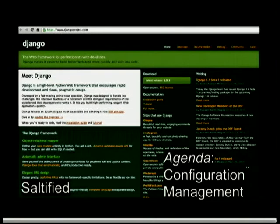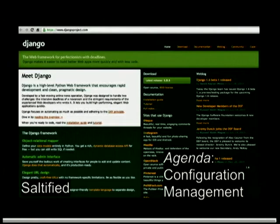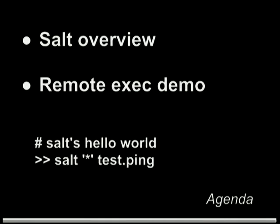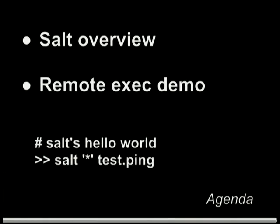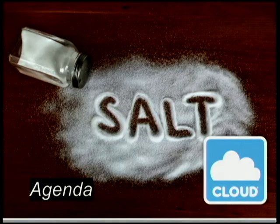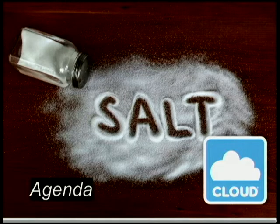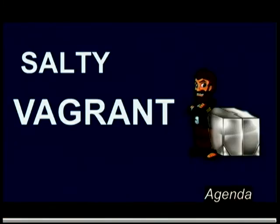So what I'm going to talk about — given the Django example, I'm going to give an example of deploying and configuration-managing a Django project website with Salt. I'm going to give an overview of Salt, how to do remote execution with Salt — that's Salt's Hello World — which communicates to all your servers and checks that they're communicating okay. If I get time, I'll talk about Salt Cloud, which spins up servers in the cloud and provisions them for you. And we do dev builds with Vagrant, which provisions virtual machines for your dev builds.